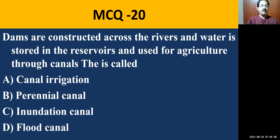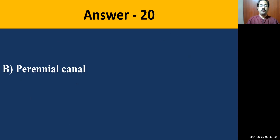MCQ number twenty: Dams are constructed across the rivers and water is stored in a reservoir and used for agriculture through canals — this is called canal irrigation, perennial canal, inundation canal, or flood canal. The most correct answer is perennial canal. In perennial canal irrigation, we construct dams, store water in the reservoir, and take a canal to supply water to agricultural fields.